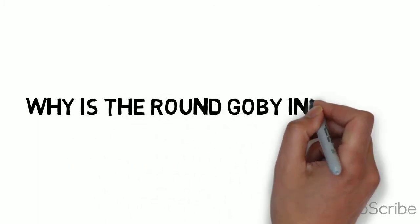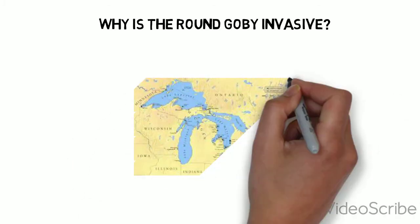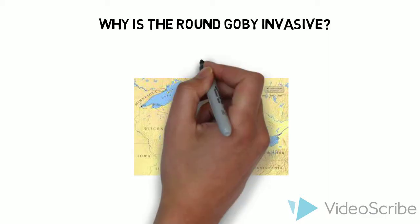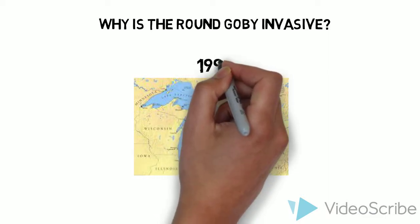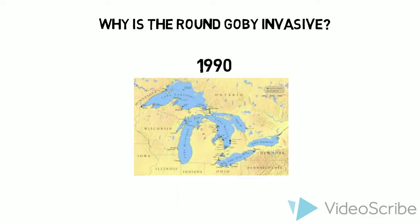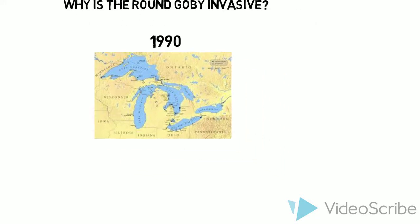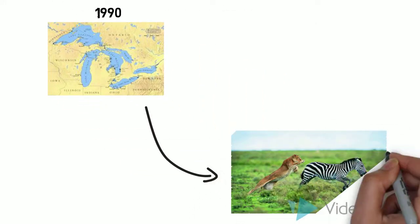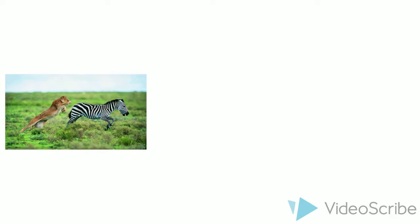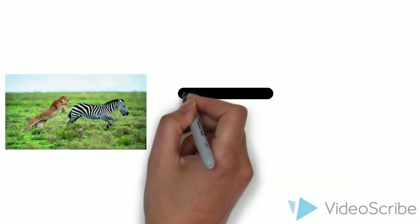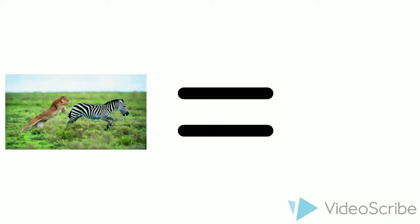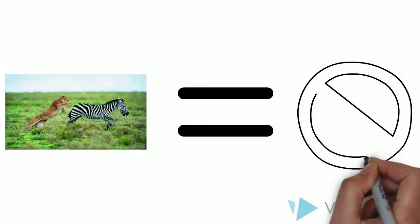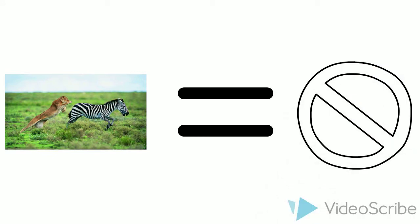Why is the Round Gobi an invasive species? The Round Gobi came to the Great Lakes in 1990. It is considered an invasive species because it has a negative impact on the Great Lakes ecosystem. Another reason is that it has no natural predators. Humans also do not eat this fish, as it is not visually appealing and does not taste good.